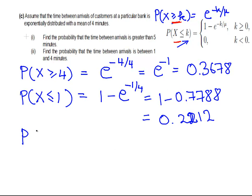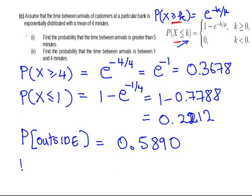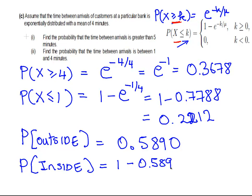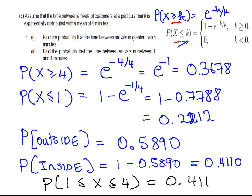The probability of being outside the interval is the sum of those two together, and that is equal to 0.5890. So the probability of being inside the interval is equal to 1 minus the probability of being outside, 0.5890, and that is equal to 0.4110. The probability of being between 1 and 4 equals 0.4110. That ends this presentation on the exponential distribution.